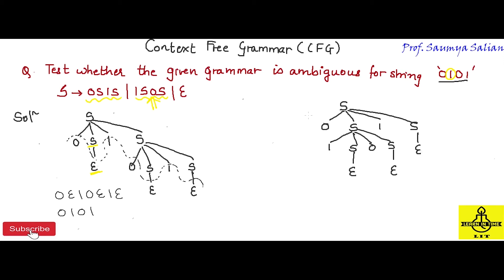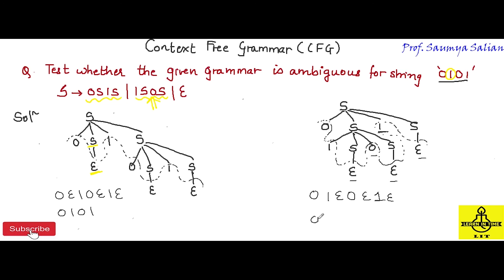Similarly, for the remaining S I substitute epsilon. The leaf nodes generated here are: 0, 1, epsilon, 0, epsilon, 1, epsilon — which is again 0, 1, 0, 1. So look at the two different parse trees: I could construct the string 0101 using two different parse trees. Therefore, the given grammar is ambiguous.